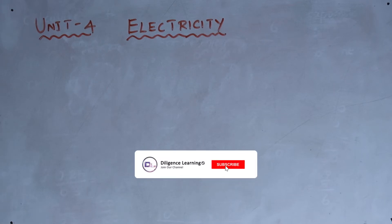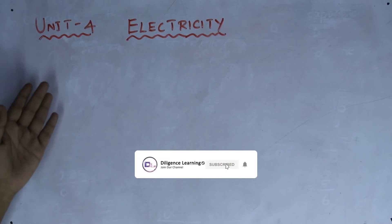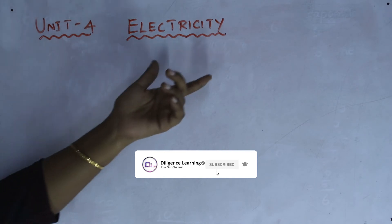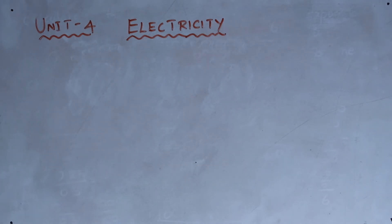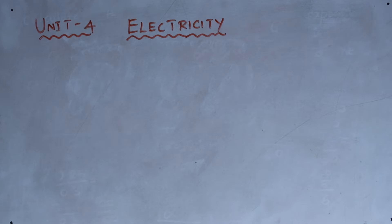Today we are going to discuss the fourth chapter in science. The name of the chapter is 'Electricity in Our Day-to-Day Life.' We come across the word electricity right — we use fans, lights, fridges, and TVs in our day-to-day life. So we are going to discuss what is electricity in this chapter.